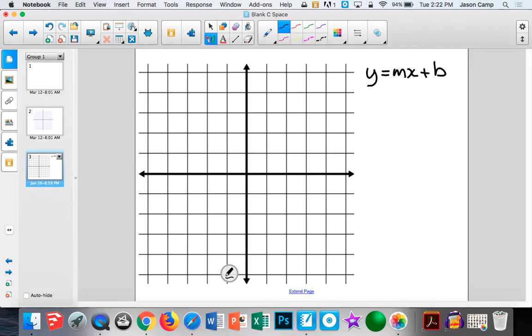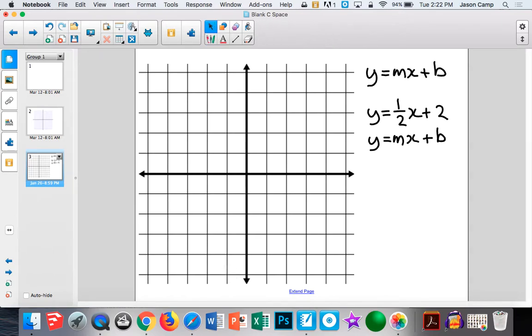So if I take a look at the equation y equals 1 half x plus 2, what I'll do is directly underneath that, I will write my y equals mx plus b, and I will note that my y-intercept lines up with this and my slope lines up with that.